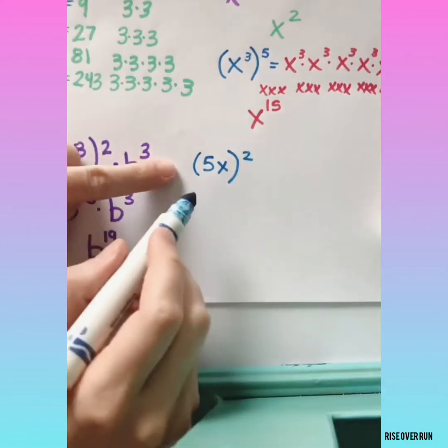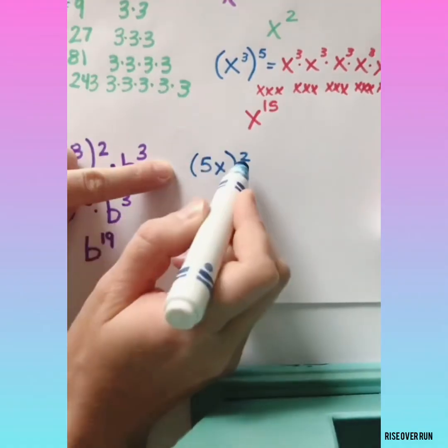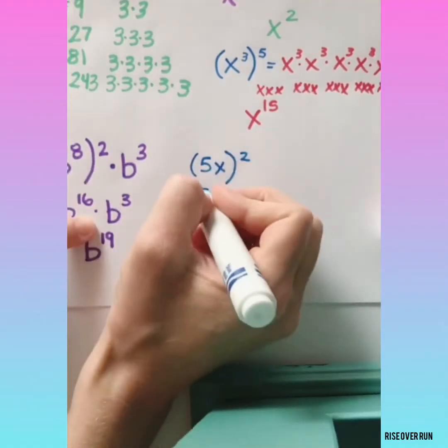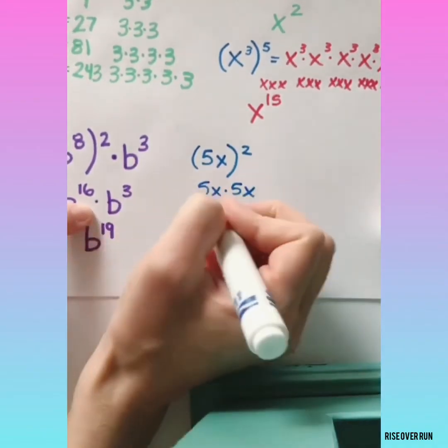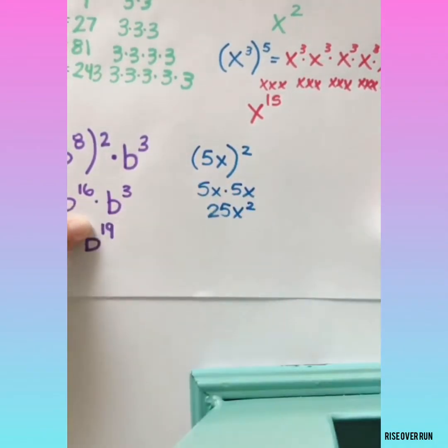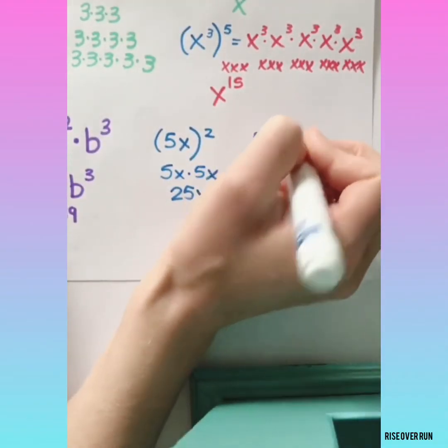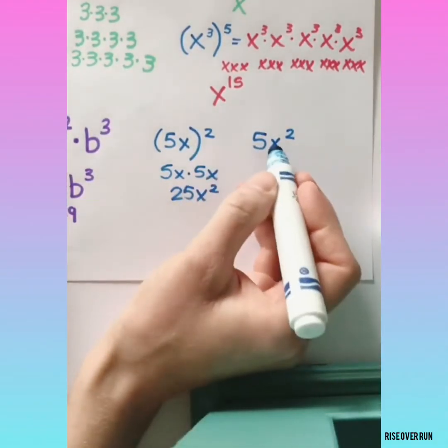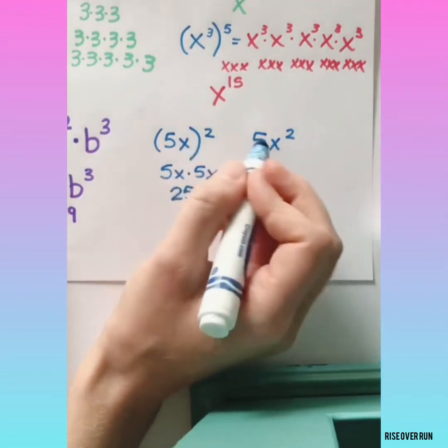Watch out for when you have parentheses and more than one item inside. That means everything gets squared. This means 5x times 5x. So that equals 25x squared. That's different than if you have 5x squared. In this case, only the x is squared, not the 5. So these are two different expressions.